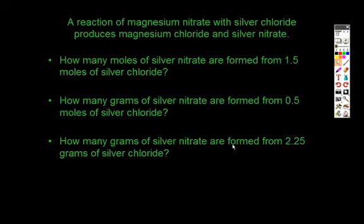The reaction we're going to look at is a reaction of magnesium nitrate with silver chloride — it produces magnesium chloride and silver nitrate. We'll be determining how many moles of silver nitrate are formed from 1.5 moles of silver chloride, how many grams of silver nitrate are formed from 0.5 moles of silver chloride, and lastly, how many grams of silver nitrate are formed from 2.25 grams of silver chloride.